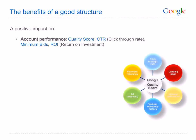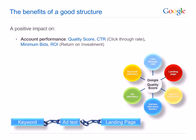Quality score measures how relevant your keyword is to your ad text and to a user's search query. Quality score is determined by different factors such as keyword relevancy, click-through rate, relevance of ad text and landing page, historical account performance, and various other factors. So always remember to keep a tight link between keyword, ad text and landing page.